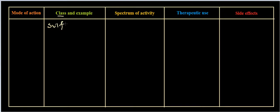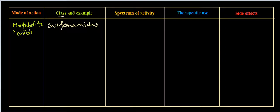Welcome again, friends. In this video tutorial, we'll be talking about sulfonamides, which are part of metabolite production inhibitors inside the cell. They function as metabolite inhibitors — so let me write: metabolite inhibition. They act as metabolite inhibitors.